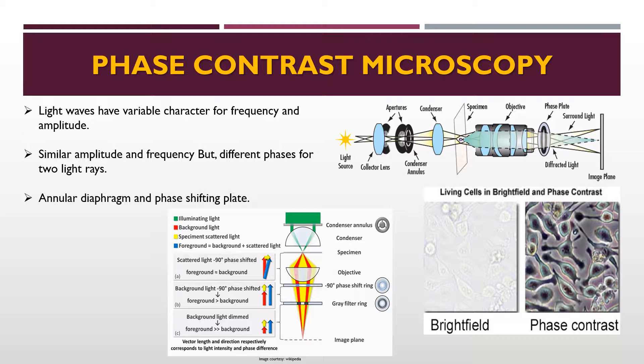In phase contrast microscopy, light passing from one object into another of a slightly different refractive index or thickness undergoes a change in phase. Light waves have variable character for frequency and amplitude; when two light rays have similar amplitude and frequency but different phases, this microscope is used to image the specimen. It is used to visualize unstained living cells — most staining processes kill cells, but phase contrast enables visualization of living cells. In a phase contrast microscope, differences in phase are translated into variations in brightness, making them detectable by eye. A phase contrast microscope is a compound microscope fitted with a phase contrast condenser and phase contrast objective.